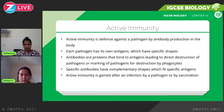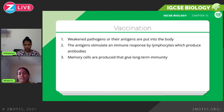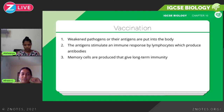That point about antibody-antigen complementarity is very important — it can carry one or two marks and is typically a Paper 4 type question where you describe the process of active immunity. In vaccination, a weakened version of the pathogen or its antigens are introduced into the body, stimulating an immune response by lymphocytes — the white blood cells — which then produce antibodies.